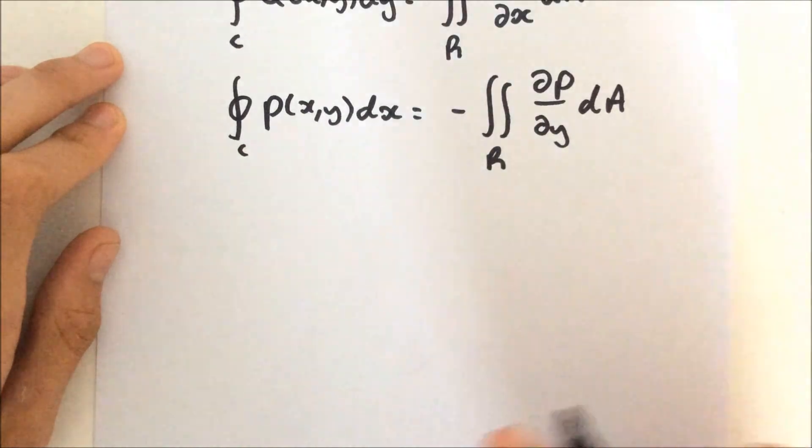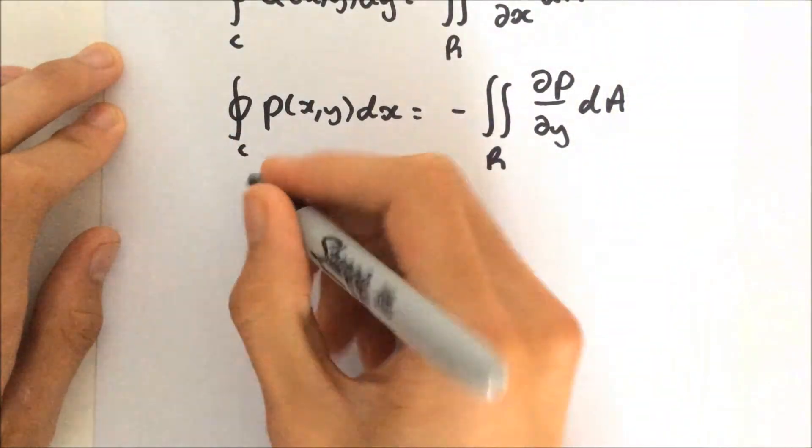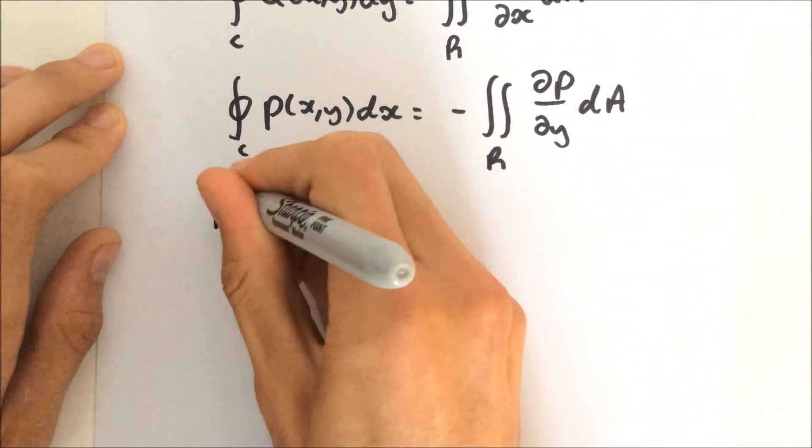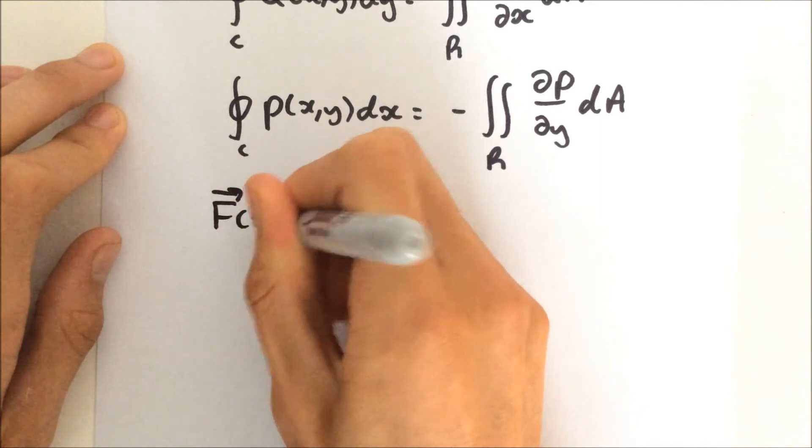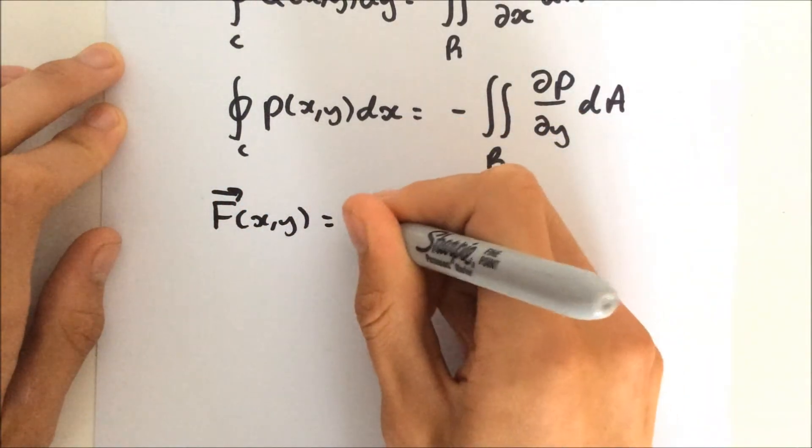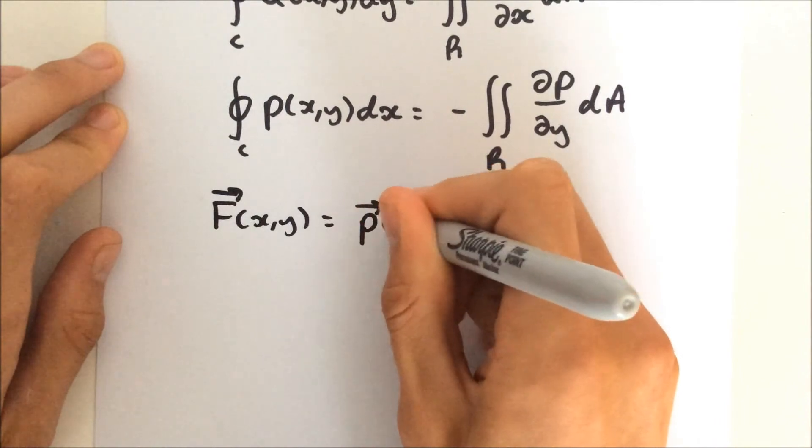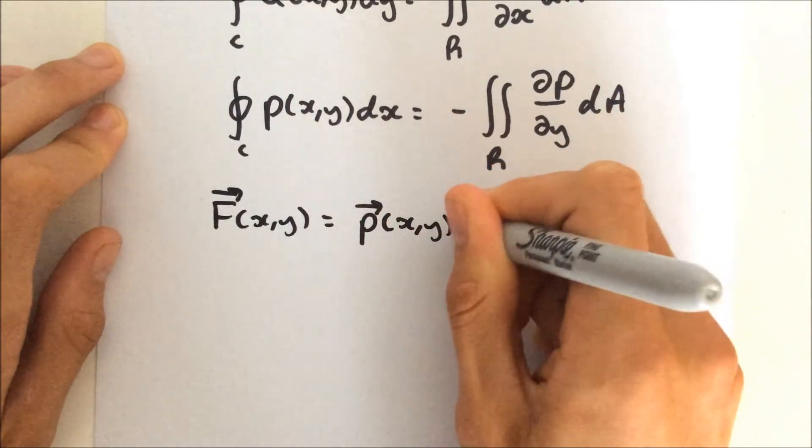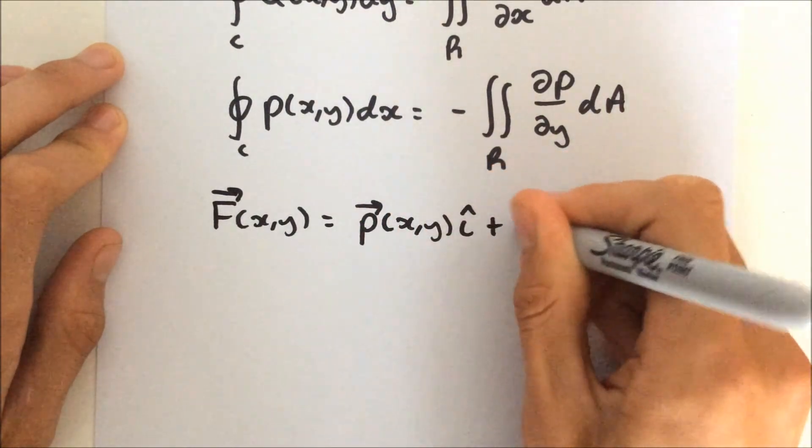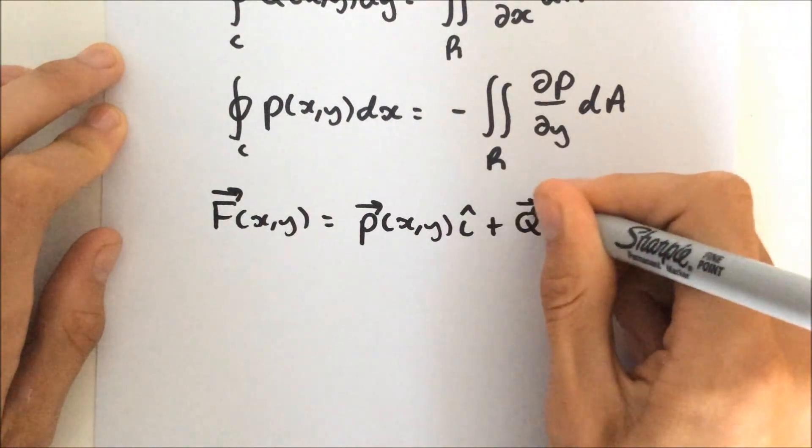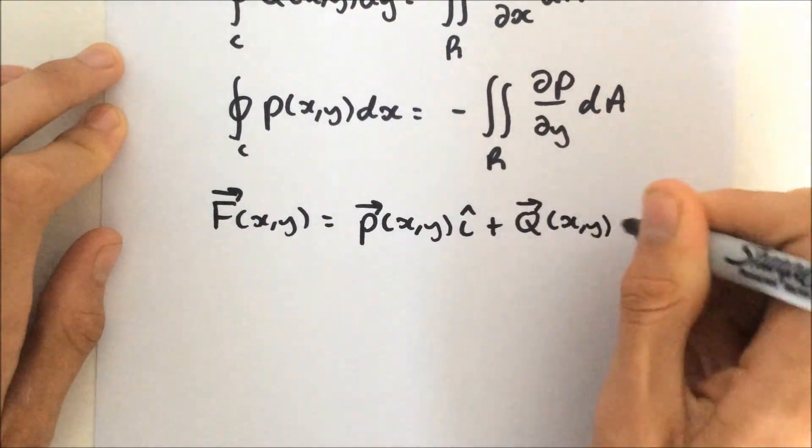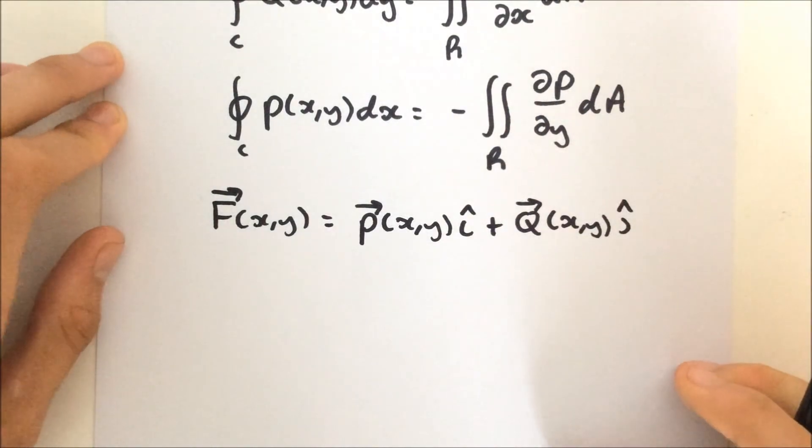So, obviously, we need to combine these now to get the complete form of Green's theorem. So one way to do that is combine the vector fields P and Q. And we're going to do that and call this F. F is a vector field with x and y components, and it's equal to P of xy i plus Q xy j, like that.